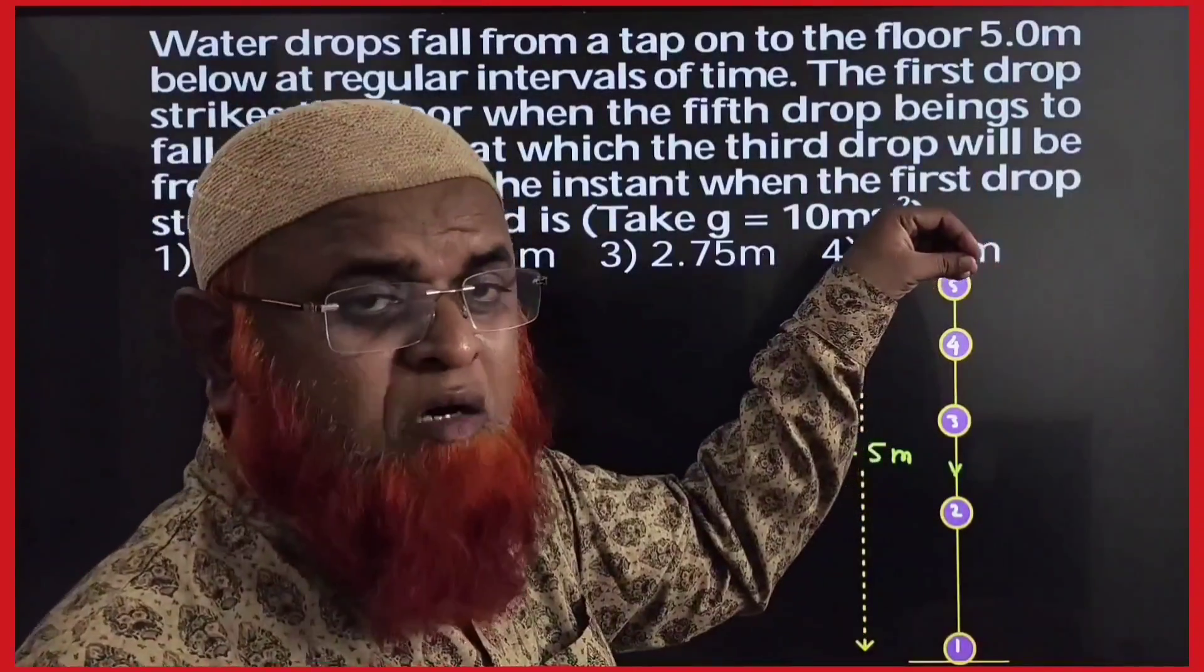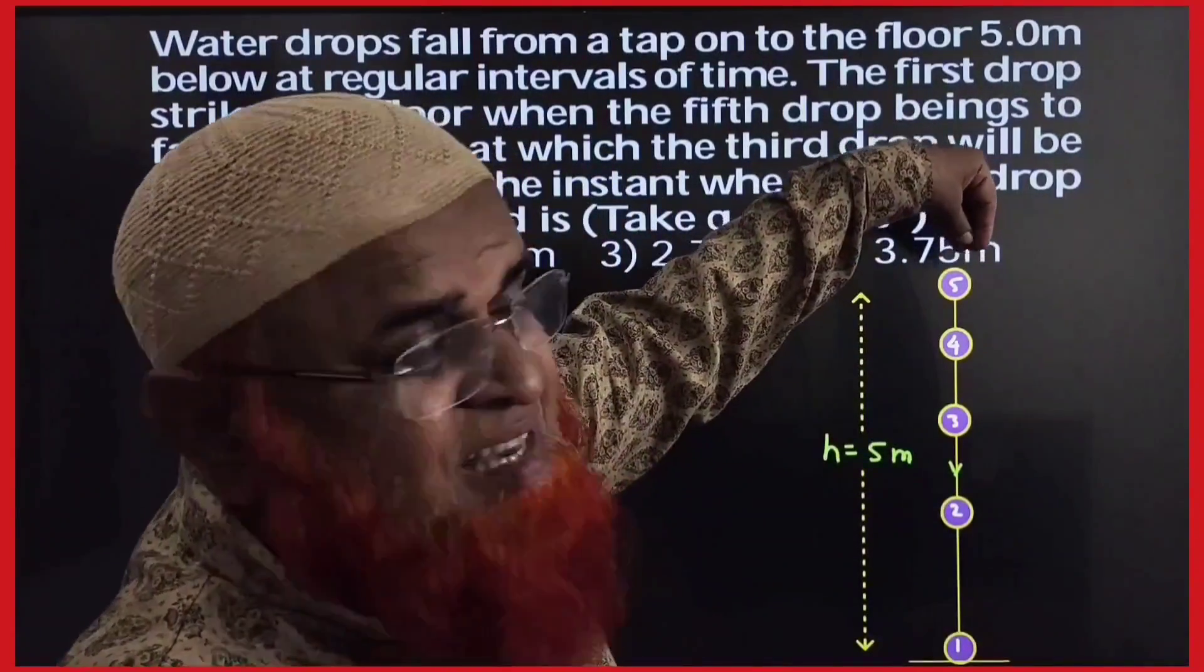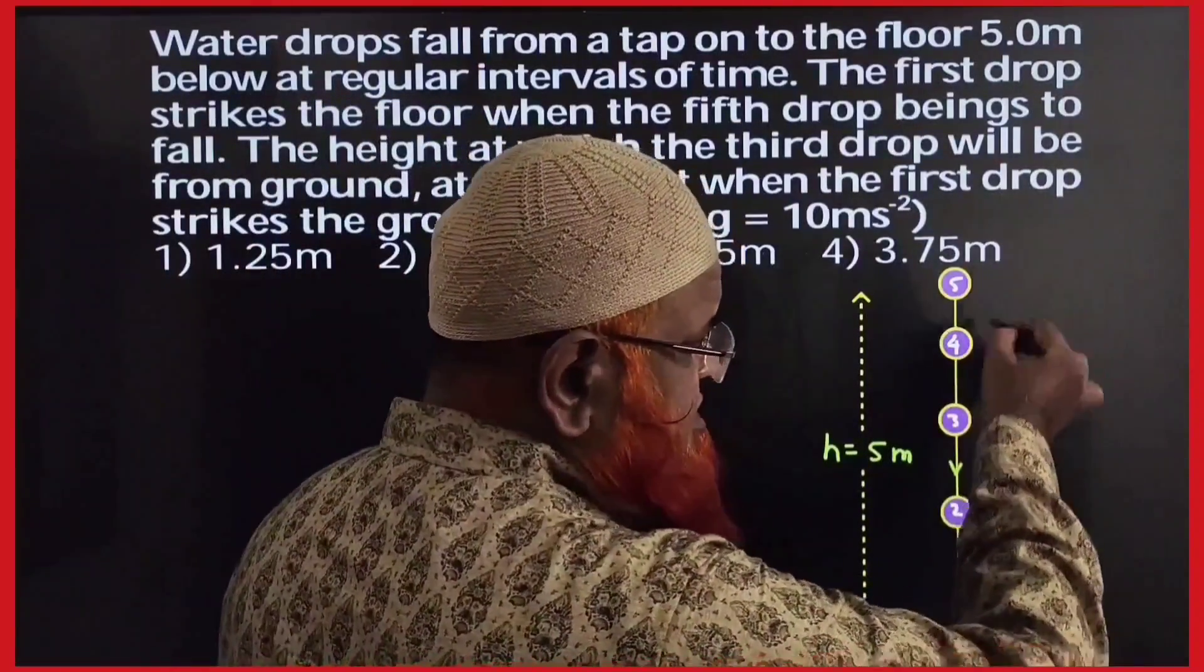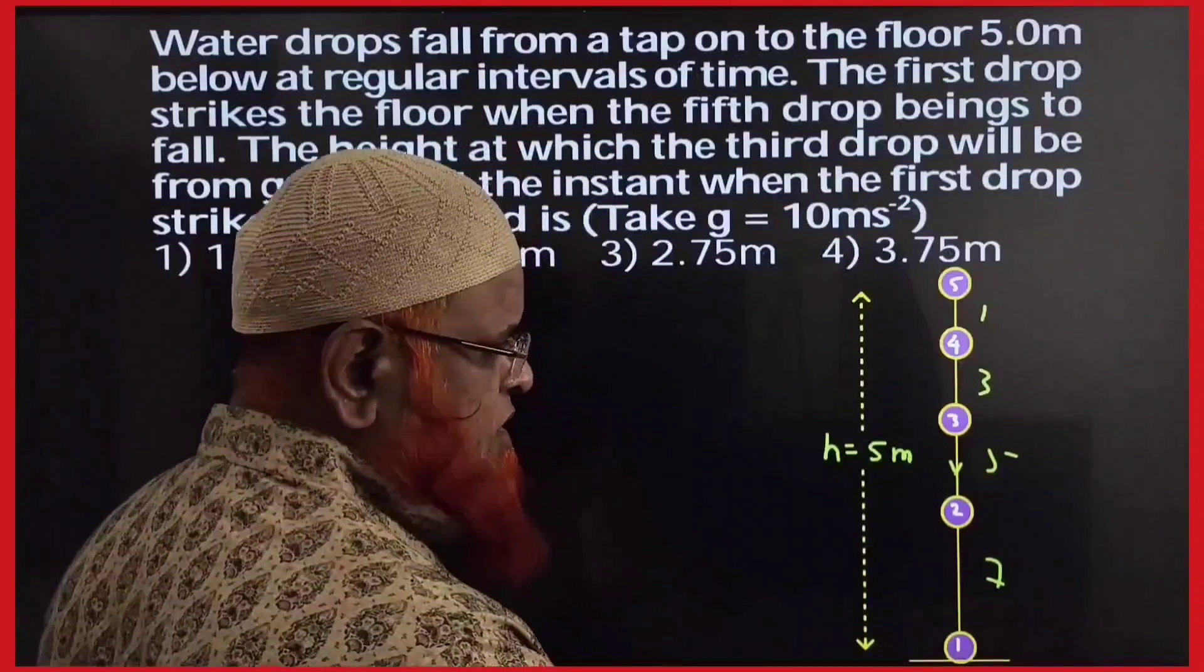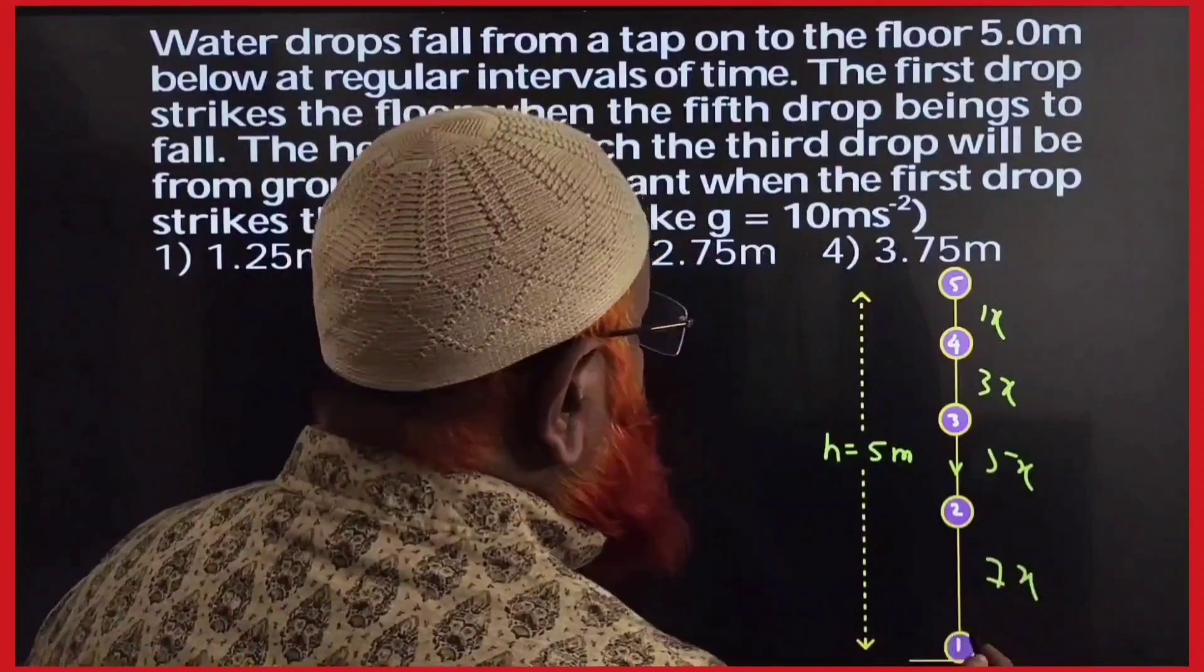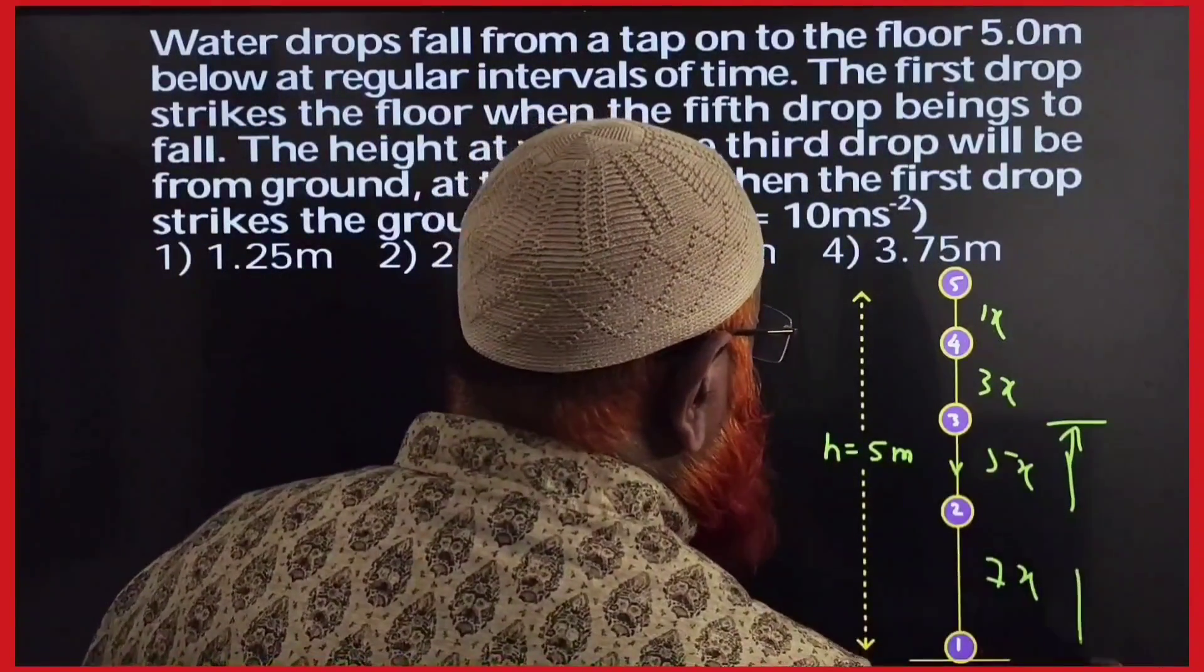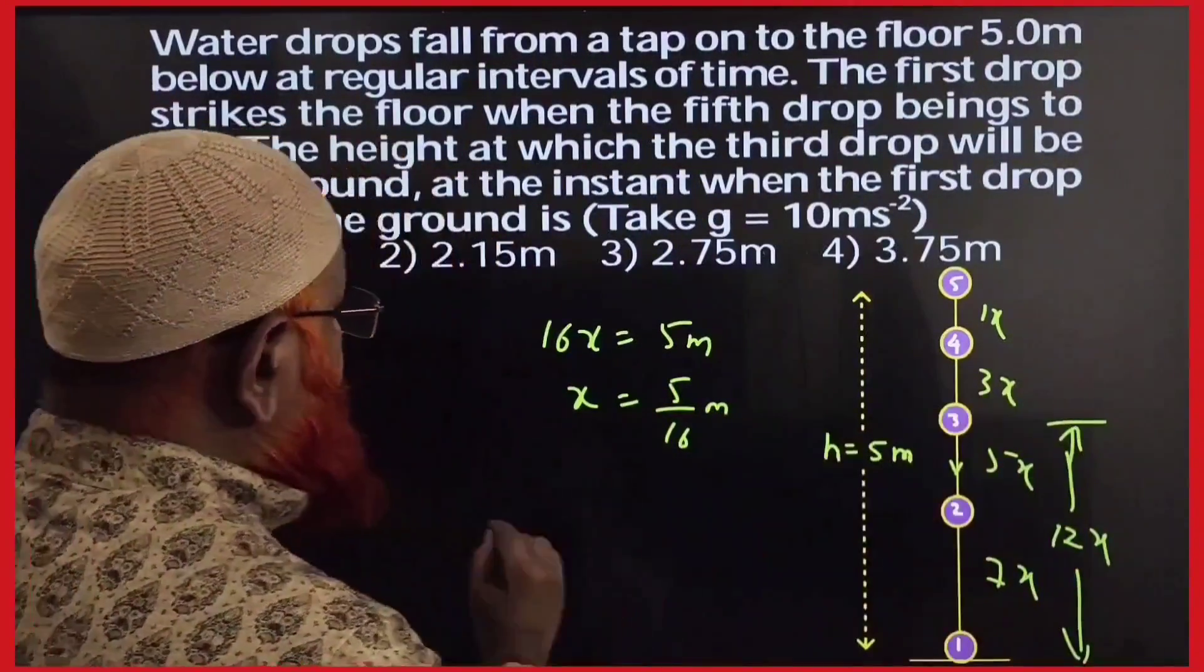Dear students, water drops falling down from a tap. First drop touches the ground when the fifth drop is released from the tap. What is the height of the third drop from the ground? For this, I told you already that the ratio of distances between the drops from top to bottom is 1 is to 3 is to 5 is to 7 like this. So, you can take 1x, 3x, 5x, 7x and so on. So, if you add how much you are getting? 16x is equal to 5 meters. Therefore, x is equal to 5 by 16 meters and the height from bottom to the third drop is taken as 5x plus 7x which is going to be 12x.